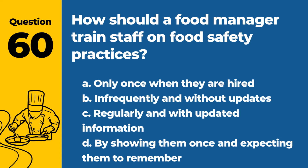Question 60. How should a food manager train staff on food safety practices? a. Only once when they are hired. b. Infrequently and without updates. c. Regularly and with updated information. d. By showing them once and expecting them to remember. Answer: c. Regularly and with updated information. Ongoing training ensures staff are current with food safety practices.